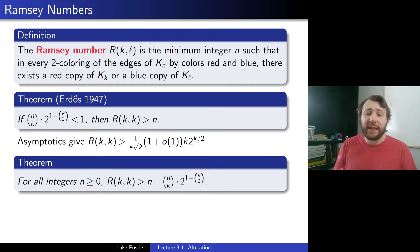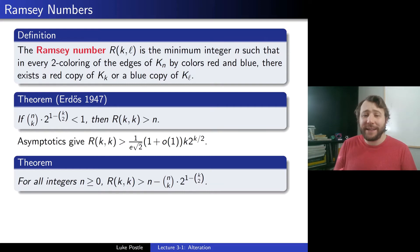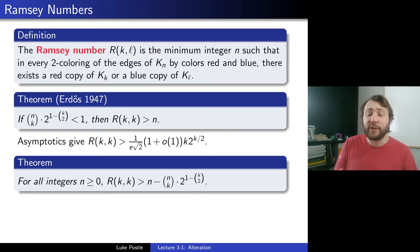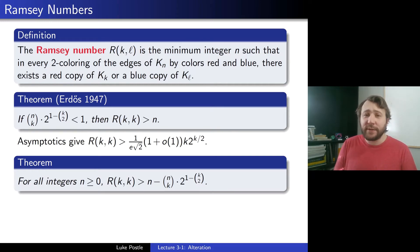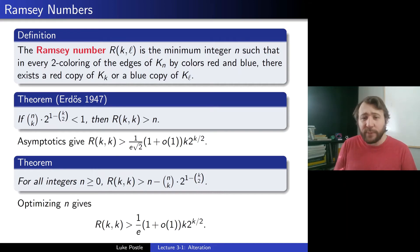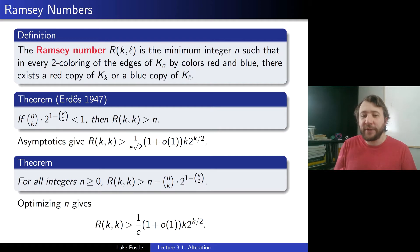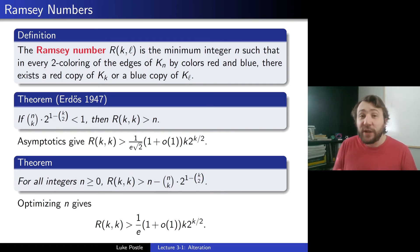What we'll do today is show that for all integers N at least 0, R(K,K) is greater than N minus N-choose-K times 2 to the 1 minus K-choose-2. So if that term is less than 1, you can show R(K,K) is greater than this difference. By optimizing N, you can work out that R(K,K) is greater than 1 over E times (1 plus little-o(1)) times K times 2 to the K over 2. So we get a root 2 improvement over Erdős's bound just by using alteration.